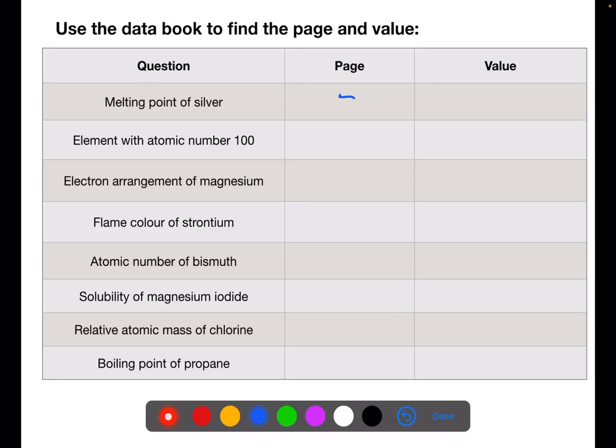The melting point of silver you'll find on page five which is the periodic table with the melting and boiling points and the value for this is 962. The element with atomic number 100 you will find on the full periodic table on page four and that is fermium. Electron arrangements are found on the selected periodic table on page six and the electron arrangement for magnesium is 2,8,2. Flame colours are also on page six and strontium burns with a red flame. Atomic number of bismuth can be found on either the full periodic table on page four or the periodic table on page six and it has atomic number 83.